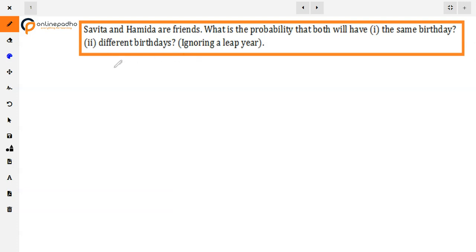First we need to know the total number of outcomes. How to find the total number of outcomes? See, the first girl Samita, from 365 days, one day is the possible outcome of 365. Similarly, Hamida also has a possible outcome of 365. Now if we see both of them, the possibility is 365 into 365.